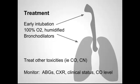For treatment, think about upper and lower airways. For the upper airway, consider early intubation given that very rapid edema. For the lower airway, all patients should receive 100% oxygen — humidified can be helpful — along with bronchodilators to help with bronchospasm. Make sure to think about other toxicities the patient may have been exposed to, such as carbon monoxide and cyanide. Monitor the patient with ABGs, clinical status, and recheck the carbon monoxide level.